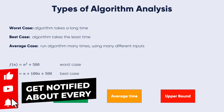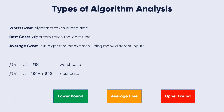There are three types of analysis that form the basis of asymptotic notation: the worst case, the best case, and the average case. The worst case defines the input for which the algorithm takes the longest time — this is the slowest time to complete. The best case defines the input for which the algorithm takes the least time — this is the fastest time to complete.